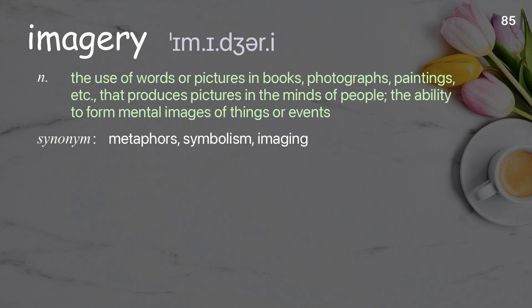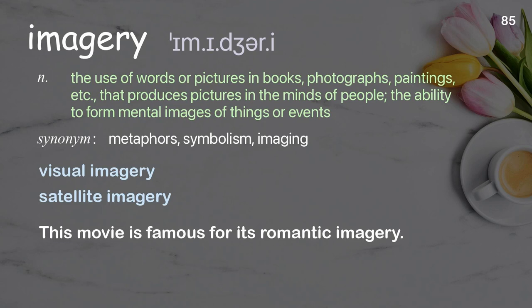Imagery: the use of words or pictures in books, photographs, paintings, etc. that produces pictures in the minds of people; the ability to form mental images of things or events. Examples: visual imagery; satellite imagery. This movie is famous for its romantic imagery.